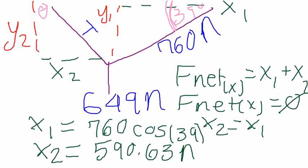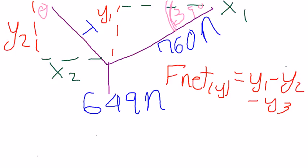For F net of Y, the equation is Y1 minus Y2 minus Y3, because everything goes down. To find Y2, we rearrange the equation. F net for Y is also zero.